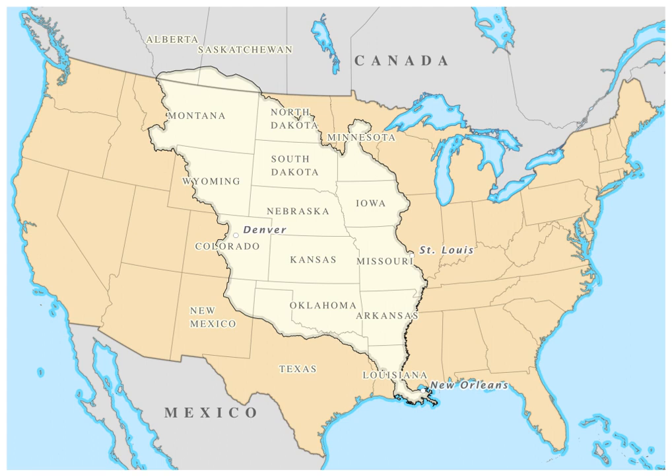On April 11, 1803, just days before Monroe's arrival, Barbet-Marbois offered Livingston all of Louisiana for $15 million, which averages to less than 3 cents per acre. The American representatives were prepared to pay up to $10 million for New Orleans and its environs, but were dumbfounded when the vastly larger territory was offered for $15 million. Jefferson had authorized Livingston only to purchase New Orleans. However, Livingston was certain that the United States would accept the offer. The Americans thought Napoleon might withdraw the offer at any time, so they agreed and signed the Louisiana Purchase Treaty on April 30, 1803.